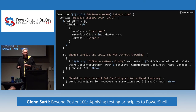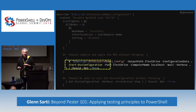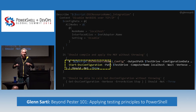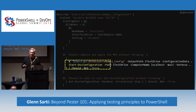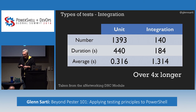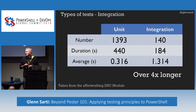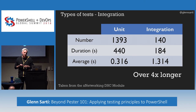Here's a brief look at an integration test from the networking DSC module. You'll notice we're using the Start-DscConfiguration cmdlet rather than Test, Get, or Set — we're using this cmdlet which actually integrates all three together. It's a bit more complicated and takes more time. On average, every integration test was taking four times longer than a unit test, and you can see we've almost got a 10 to 1 ratio of unit tests to integration tests.